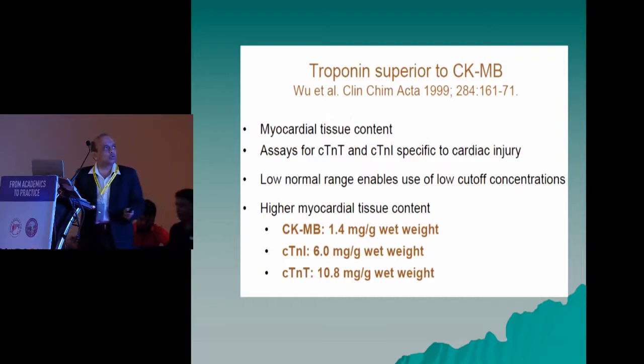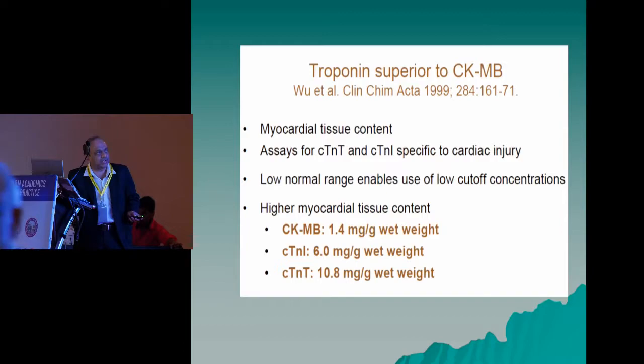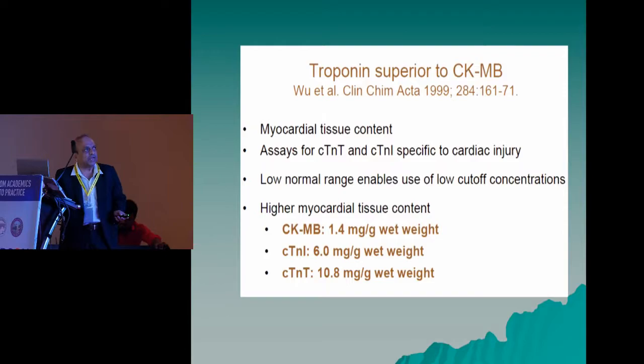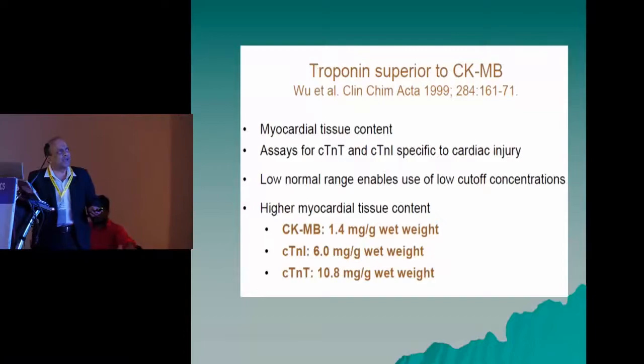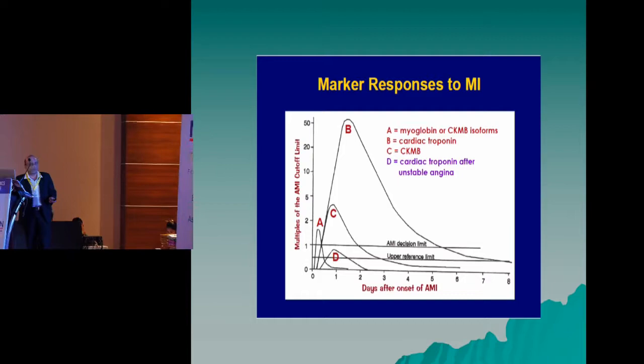The ideal biomarker should be rapidly released into the blood, have high concentration in myocardium, be specific and sensitive to myocardial tissue, remain elevated for a long time, correlate with prognosis, and help assess whether reperfusion after intervention was successful. Troponin is definitely superior to CKMB because it has very high myocardial tissue content — troponin-I has six times more content than CKMB and troponin-T has nearly ten times more. As a result, blood levels are higher and troponin is more cardio-specific.